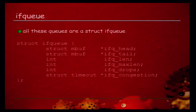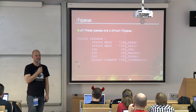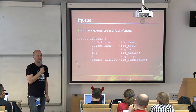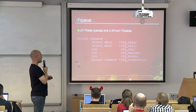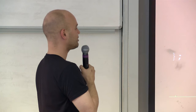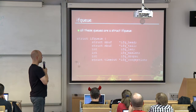An ifq struct is actually pretty simple. You have the head of the queue — a pointer to the head mbuf — and a pointer to the tail. That's an optimization: keeping the tail pointer avoids walking the entire chain to find the last element at enqueue time. You have a variable holding the current length, a variable holding the maximum allowed length, and a counter for how many packets have been dropped.